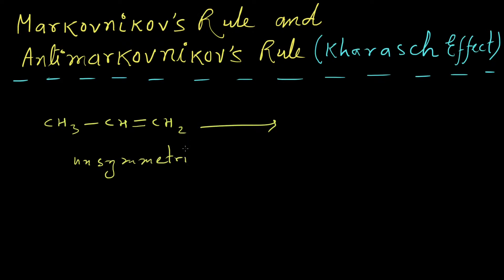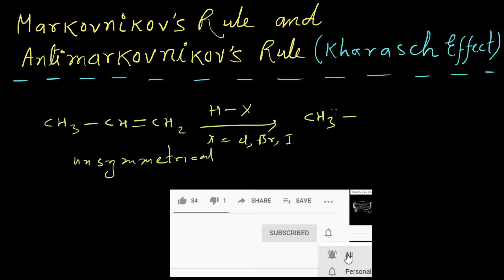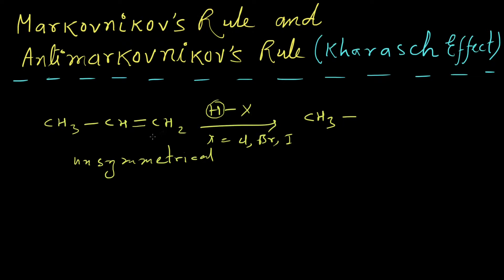This is an unsymmetrical alkene. So when this alkene reacts with any hydrogen halide — where X equals chlorine, bromine, or iodine — Markovnikov's rule tells us what will be the product. According to Markovnikov's rule, hydrogen will add to the carbon which already has the highest number of hydrogen atoms attached to it. So hydrogen will go to this CH₂ carbon atom and the halogen will go to the carbon which contains the least number of hydrogen atoms. So the CH₂ carbon will make a single bond with the hydrogen atom.